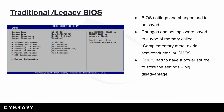BIOS settings and changes had to be saved somewhere. These changes and settings were saved to a type of memory called the Complementary Metal Oxide Semiconductor, or CMOS. CMOS had to have a power source to store the settings, so that was a big disadvantage — if the CMOS lost that power source, it would lose the settings.